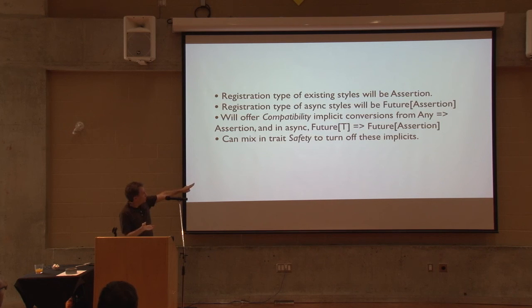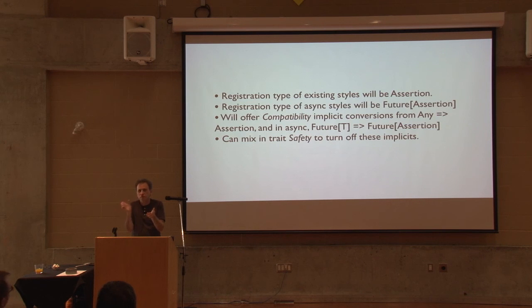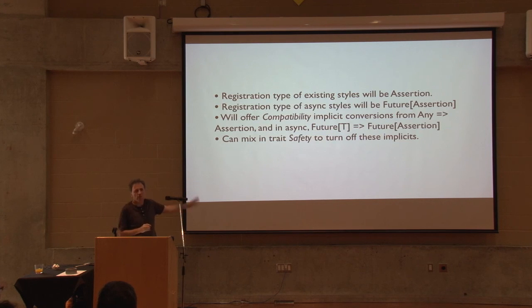There's another trait called Safety which if you want, you can turn off those two implicits, and now you're actually forced to make type Assertion. Which means if you want to use AkkaTestKit, which has expectMsg that returns Unit, at the end you'll have to say 'succeed', which is kind of annoying. So if you're using TestKit, you might go for Compatibility. If you're just using ScalaTest's assertions, you might go for Safety. I think that's the best I could come up with - two families: regular ones that work just like before so all your old code works, and new async ones.